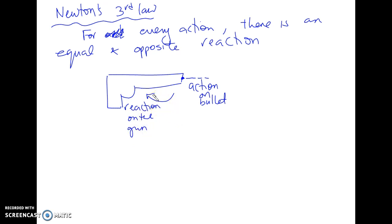People might say: if every action has an equal and opposite reaction on the same object, then forces should always cancel out and you'd never have acceleration. But they don't cancel out, which means they are not on the same object. For example, I bounce a ball on the ground — one force is on the earth, the other is on the ball. Two different objects. We don't see the earth moving, but we see the reaction in ourselves as we jump up.